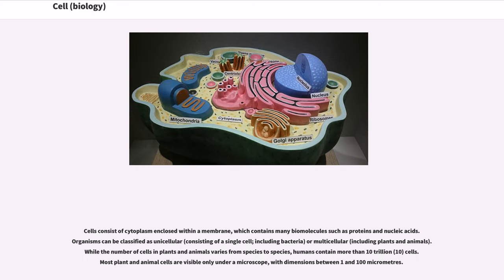Cells consist of cytoplasm enclosed within a membrane, which contains many biomolecules such as proteins and nucleic acids. Organisms can be classified as unicellular, consisting of a single cell, including bacteria, or multicellular, including plants and animals.